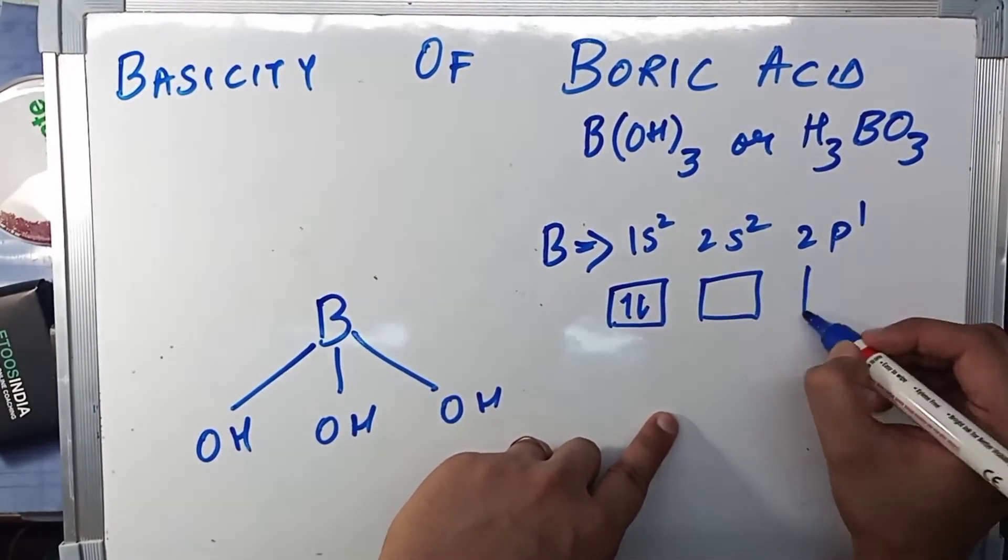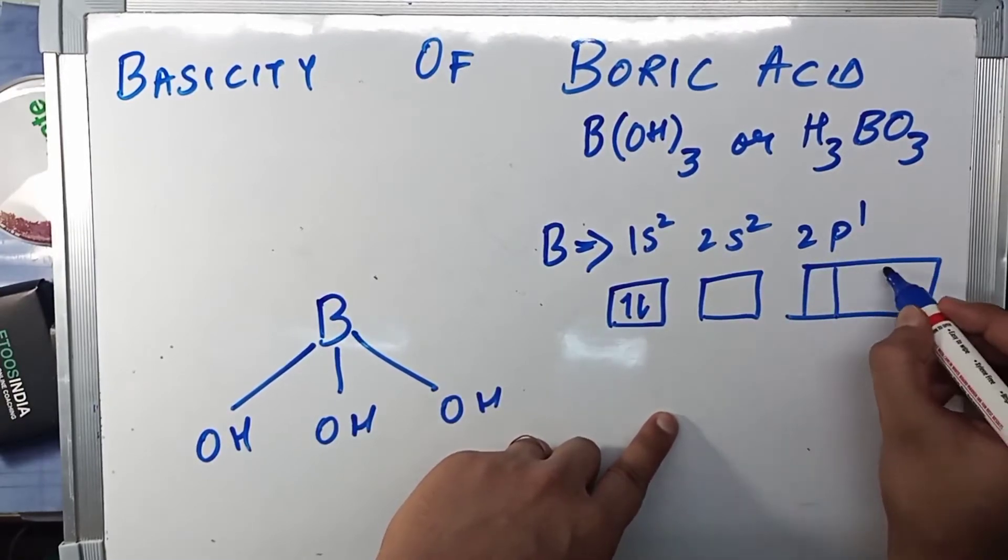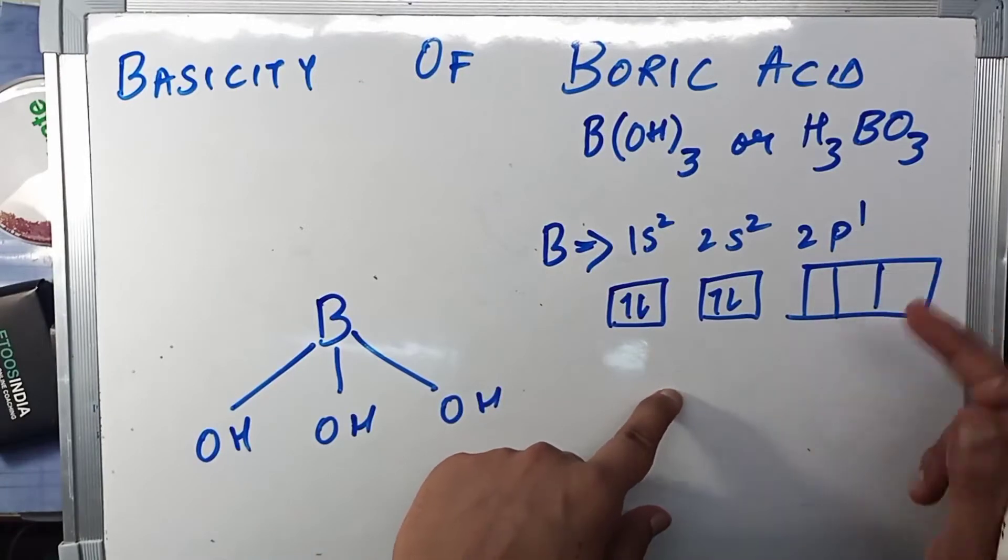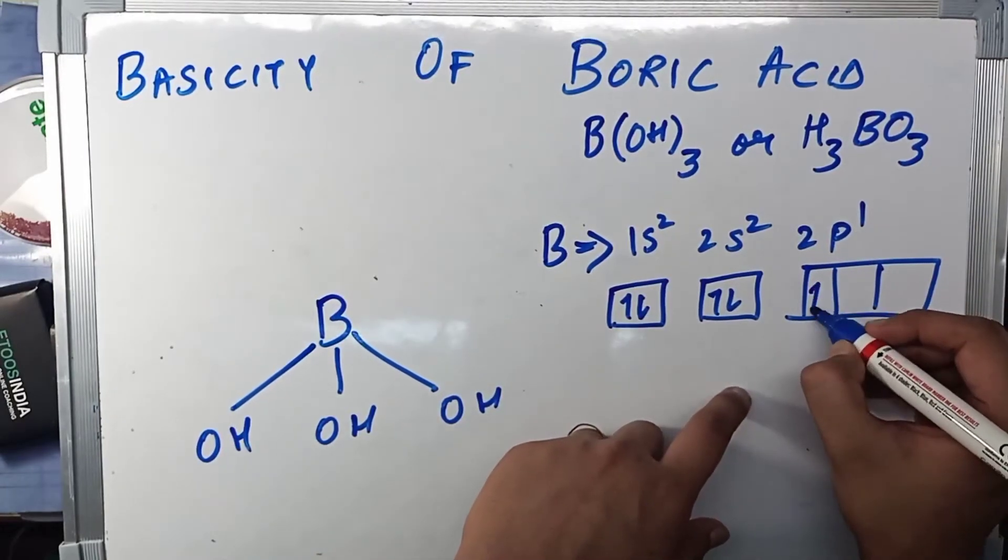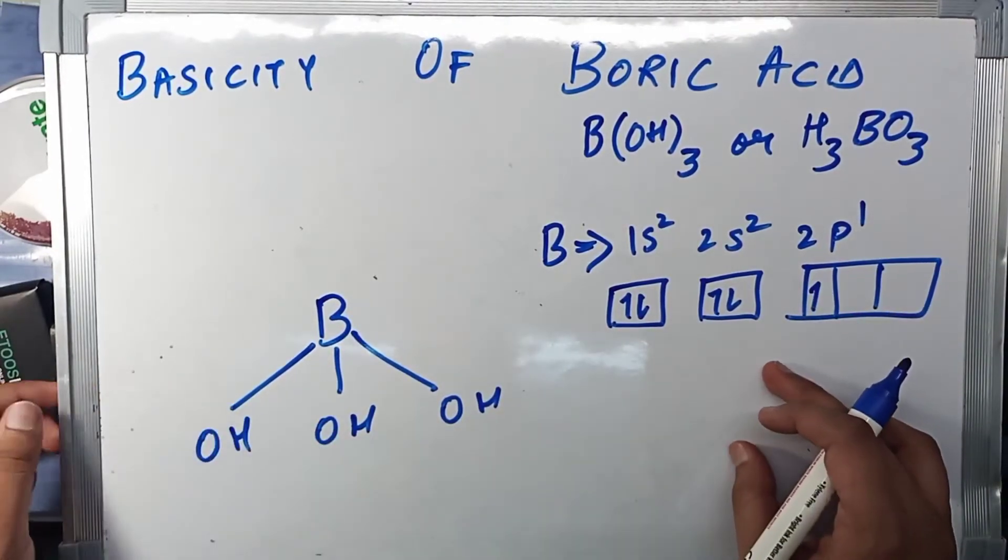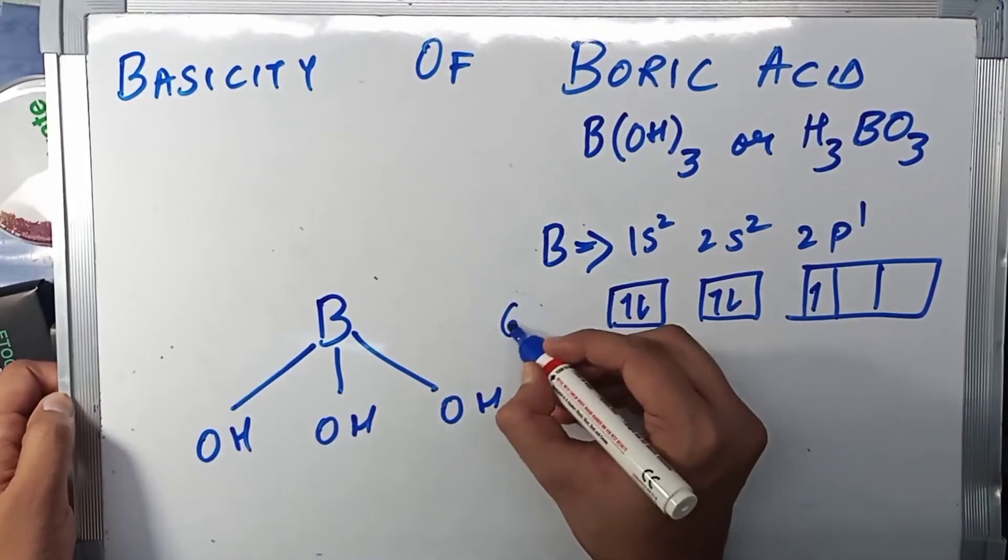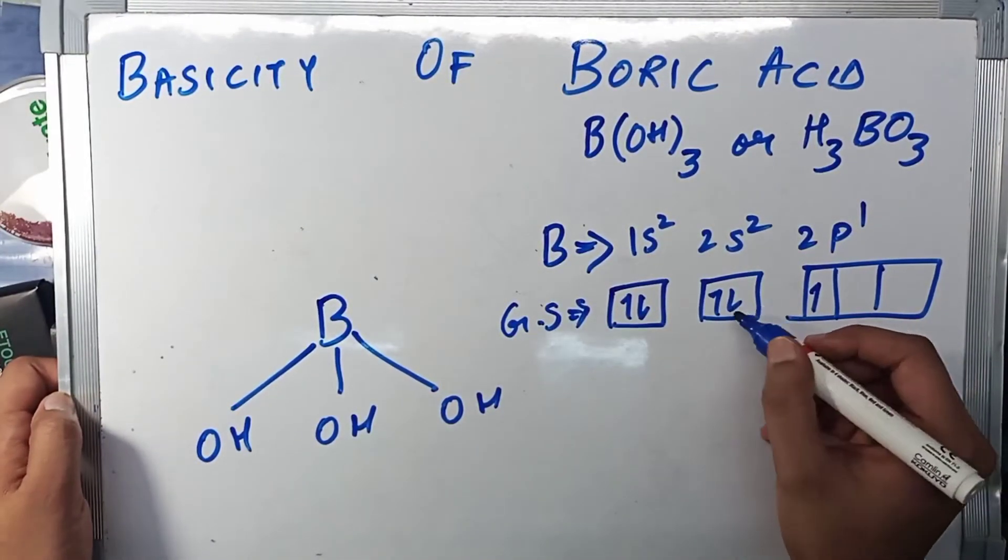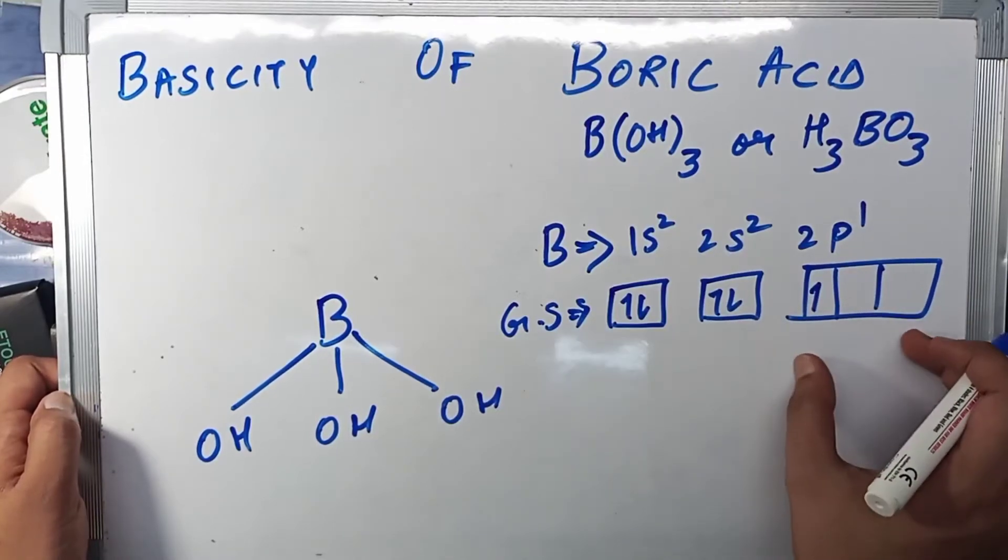Now how does it make three bonds? Okay, so this one is filled: 1s², 2s², and 2p. Two electrons in 2s subshell, and in 2p subshell we have just one electron. So this is in the ground state.